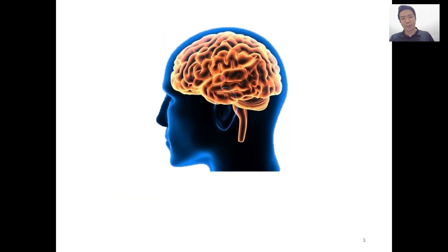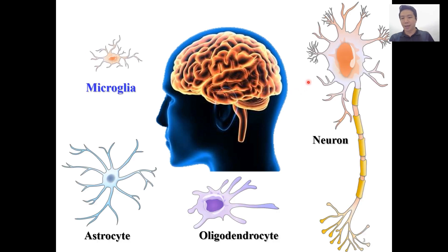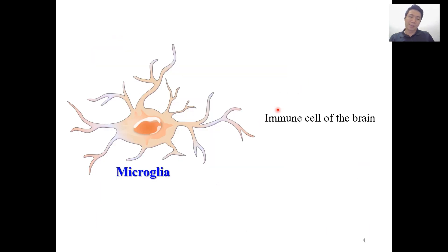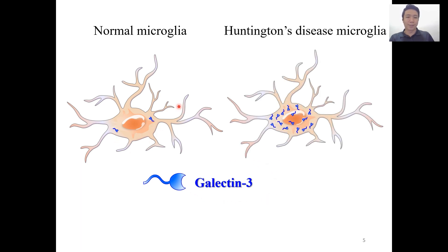In the brain, we have neurons, oligodendrocytes, astrocytes, and microglia. Microglia is the immune cell of the brain. Under normal conditions, the level of galectin-3 is very low in the cells. However, in Huntington's disease microglia, the level of galectin-3 is significantly upregulated.